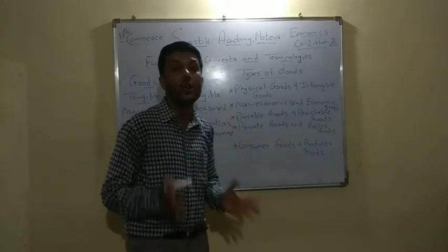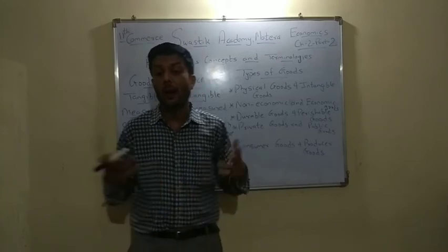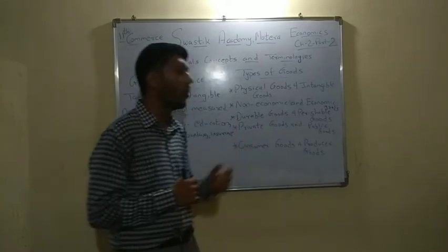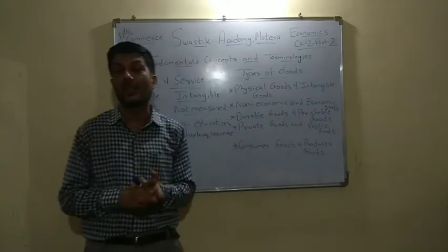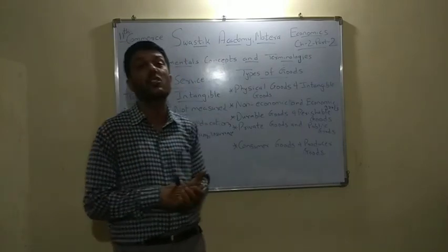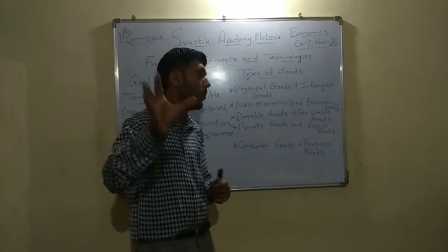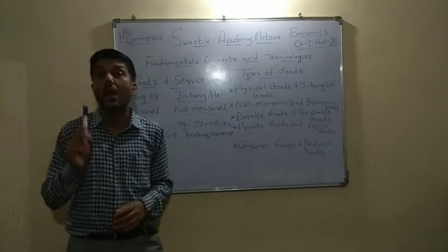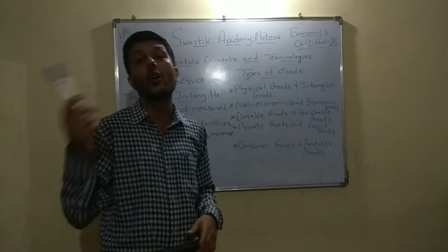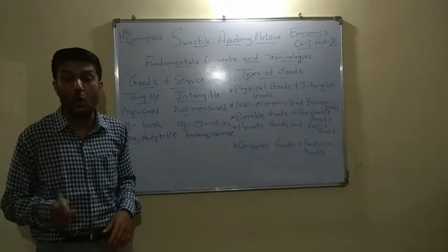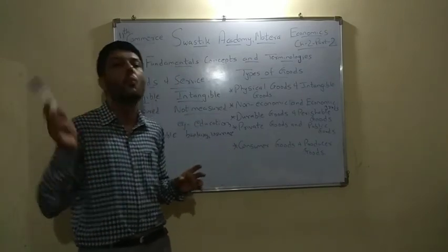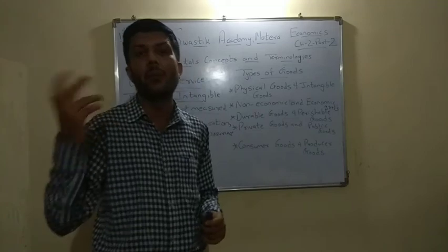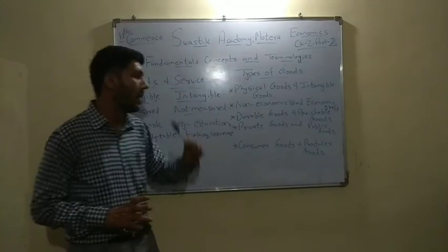Durable goods hain, perishable goods: durable jo tikau hai — aapka mobile hai, aapka TV hai, aapka fridge hai — lambe samay tak tikta hai aur badhiya tariqe se usko upyog kar sakte ho. Perishable: fruits, vegetables hoti jaldi kharab ho jate hain, par modern technology ki wajah se yeh perishable goods store kiye ja sakte hain aur future needs ke liye upyog kiye ja sakte hain. Private goods yani ek hi bande ki maaliki, aur woh upyog kar sakta hai — woh goods koi aur upyog nahi kar sakta, jaise ghar hai, biscuit ka packet ho ya kuch bhi ho. Public goods: consumption hota hai saath mein, public garden hai, public toilets hain — yeh sab public goods mein aate hain.